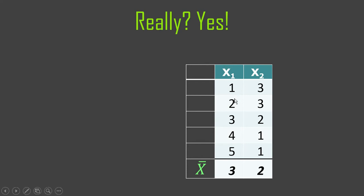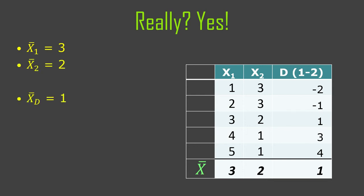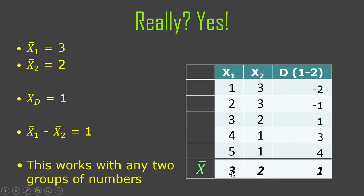Here's a demonstration. Imagine you've got one group of observations: 1, 2, 3, 4, 5, and another that's 3, 3, 2, 1, 1. The mean of group 1 is 3 and the mean of group 2 is 2. Take the differences doing group 1 minus group 2 consistently: negative 2, negative 1, 1, 3, 4. The mean of those differences is 1, and 3 minus 2 is also 1. So the mean of the differences equals the difference between the two group means. We call the difference scores d, and their mean d-bar.